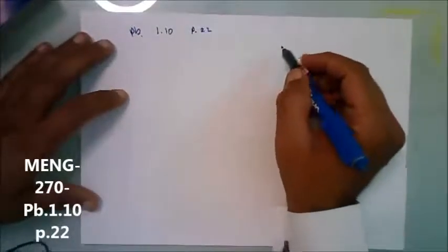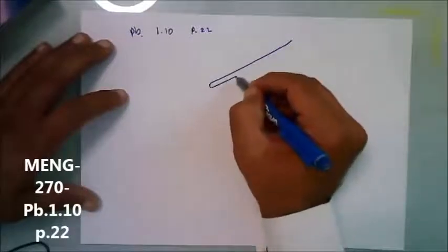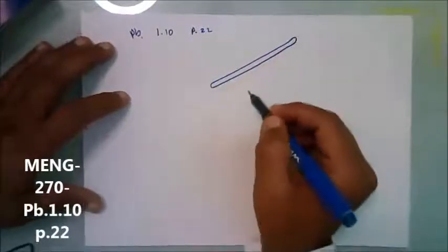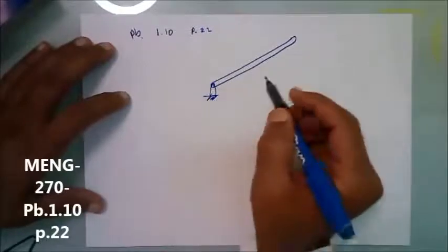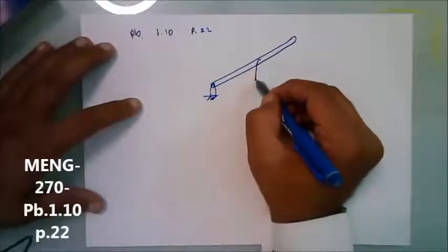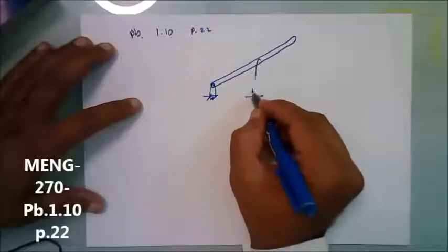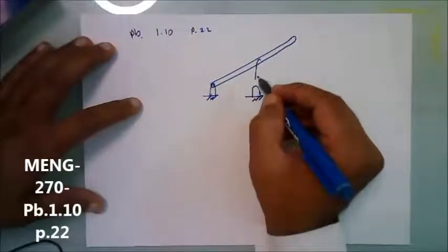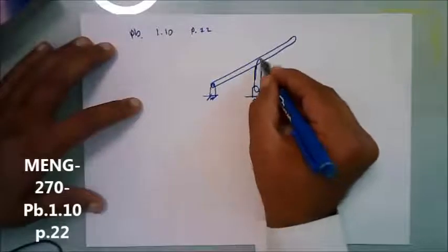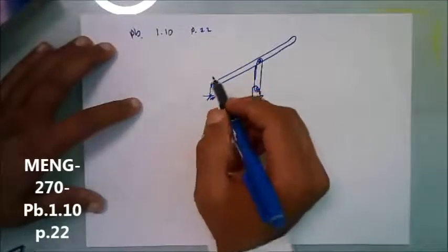Given this structure, we are going to draw the structure given to us. It is supported at two points, and here it is supported using another member.